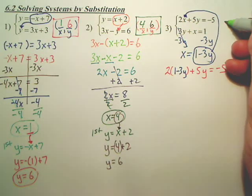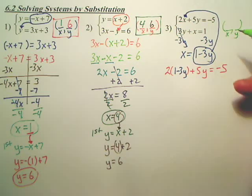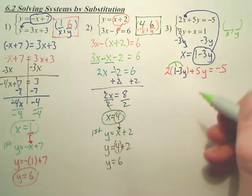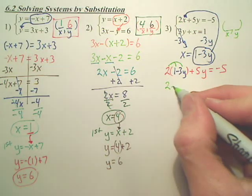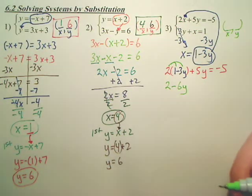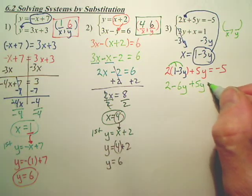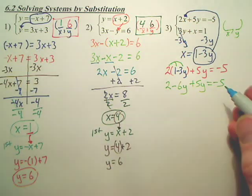Yeah. Remember, we're looking for a coordinate, x, y. I'm going to find y here. Can I distribute? Yeah, that's 2. 2 times negative 3 is negative 6y. Bring down the plus 5y.